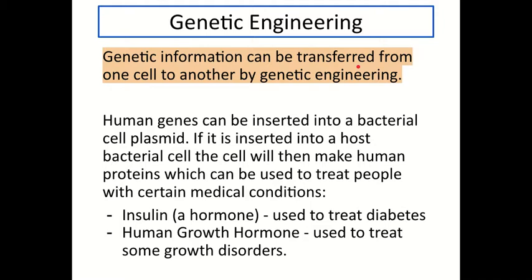The first key point in this topic is to describe what genetic engineering is. Genetic information — DNA, the genetic code — can be transferred from one cell to another by a technique called genetic engineering. In most cases we're talking about taking a gene from one type of cell or organism and placing it within the DNA of a completely different cell or organism.